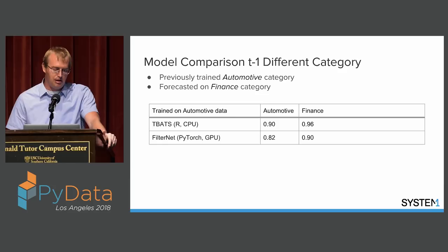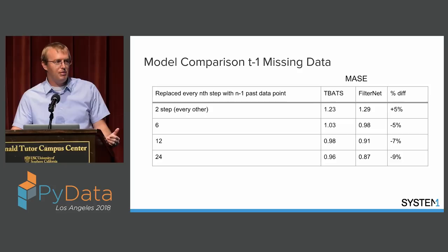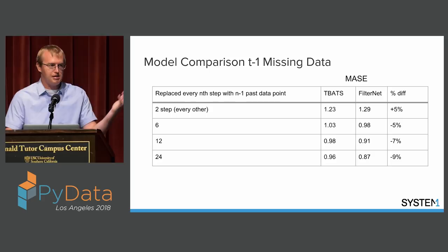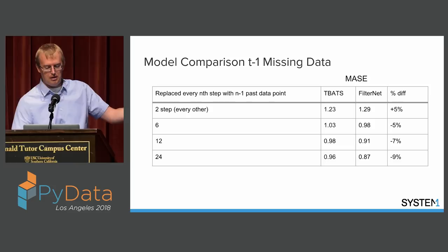We also tested the limits with missing data. I systematically replaced every nth data point with the median — what we'd typically do with missing data. At the two-step level — filling every other point, so half the data is missing — both models performed poorly, worse than just using the most recent data point. As you fill in fewer missing points both models improve, but the key takeaway is that the FilterNet's percentage difference gets worse and worse with more missing values, meaning it's more susceptible to data quality issues than TBATS.